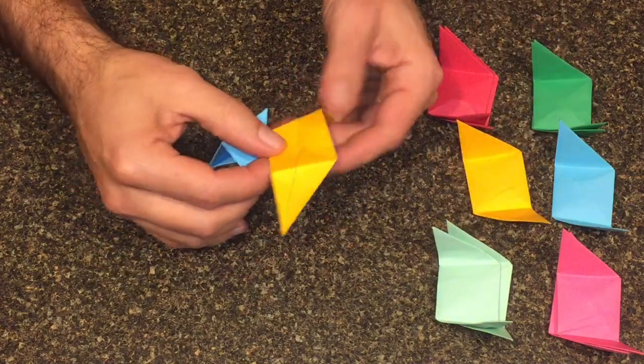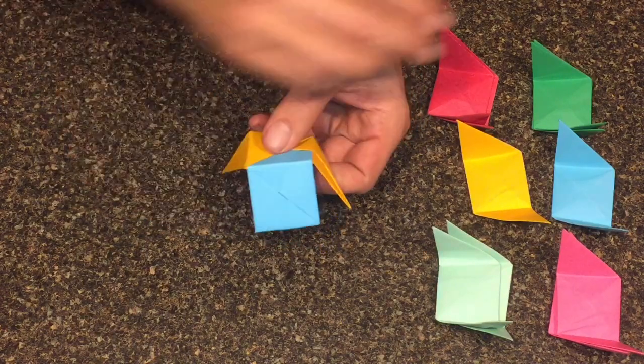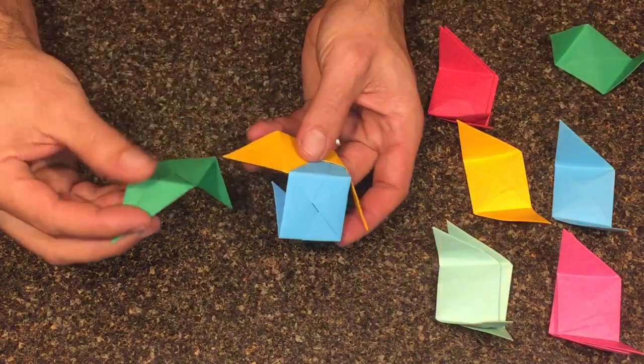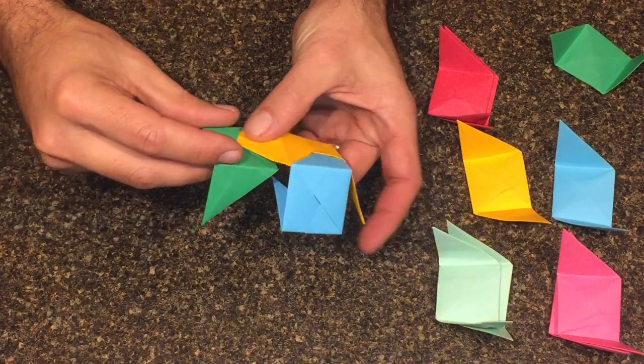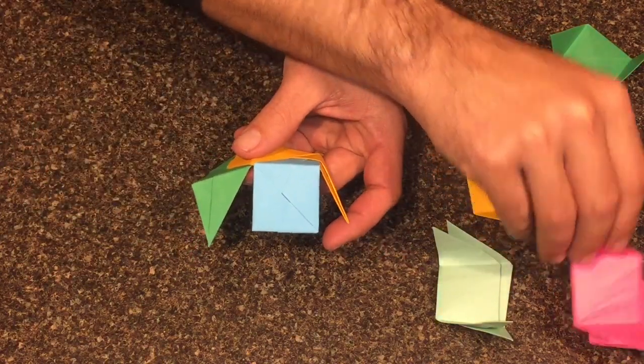Okay, now that we have the 12 basic building blocks, let's put them together. This time, instead of putting three pieces together to form a pyramid, we're going to put four pieces together to start the octahedron.